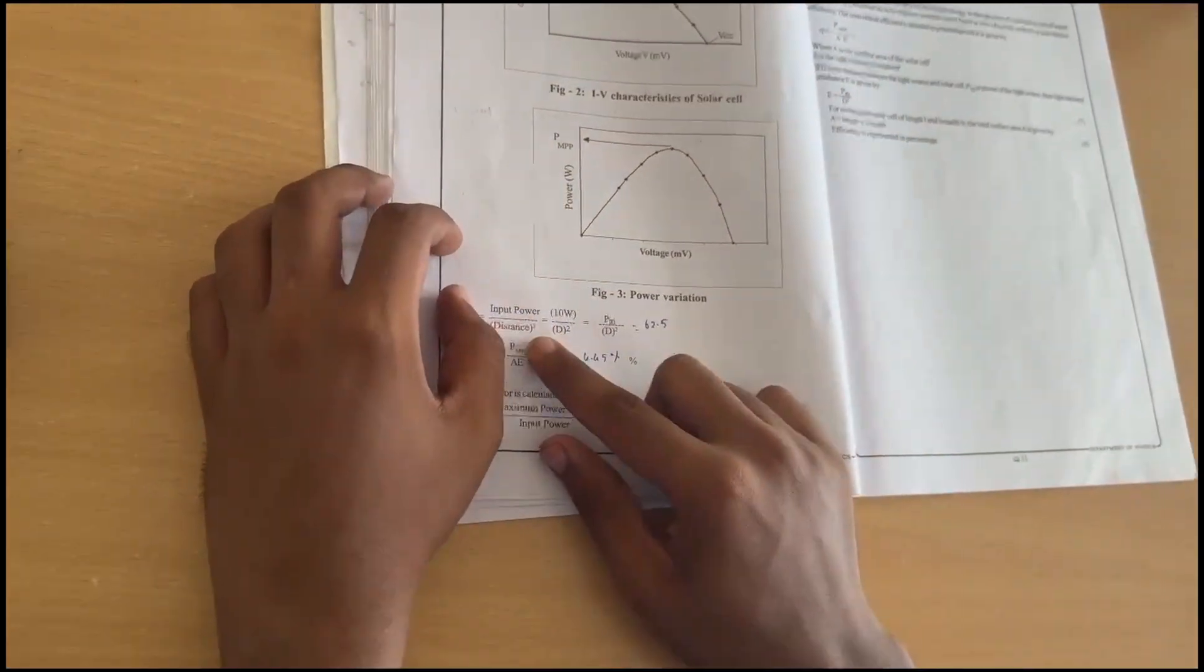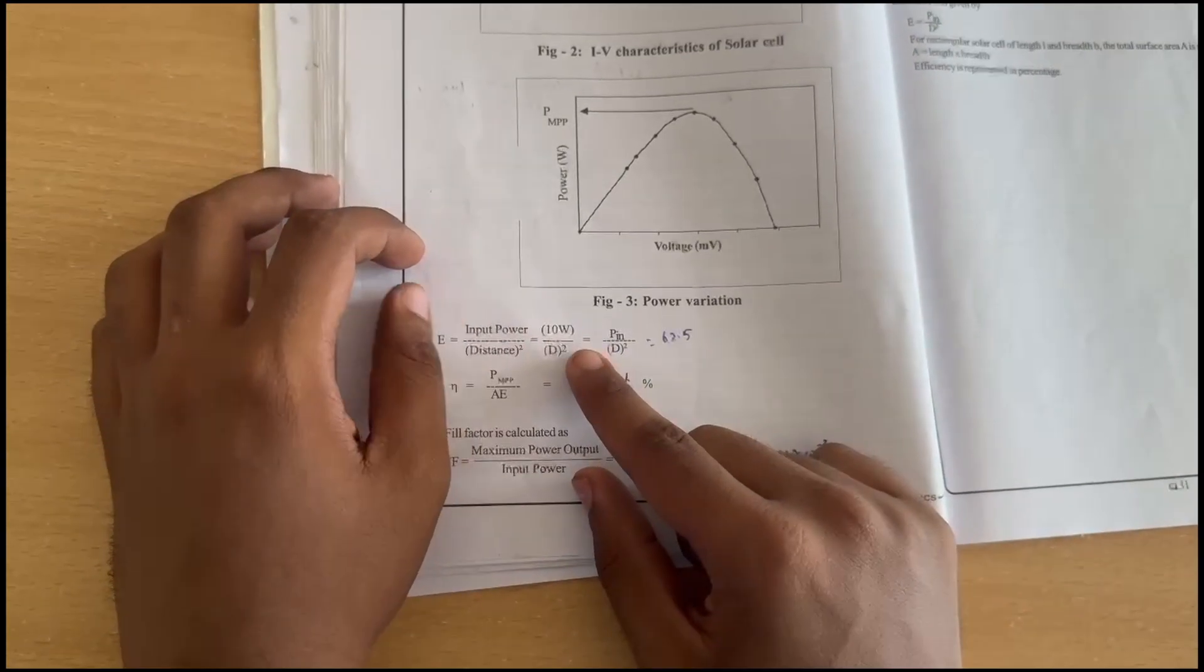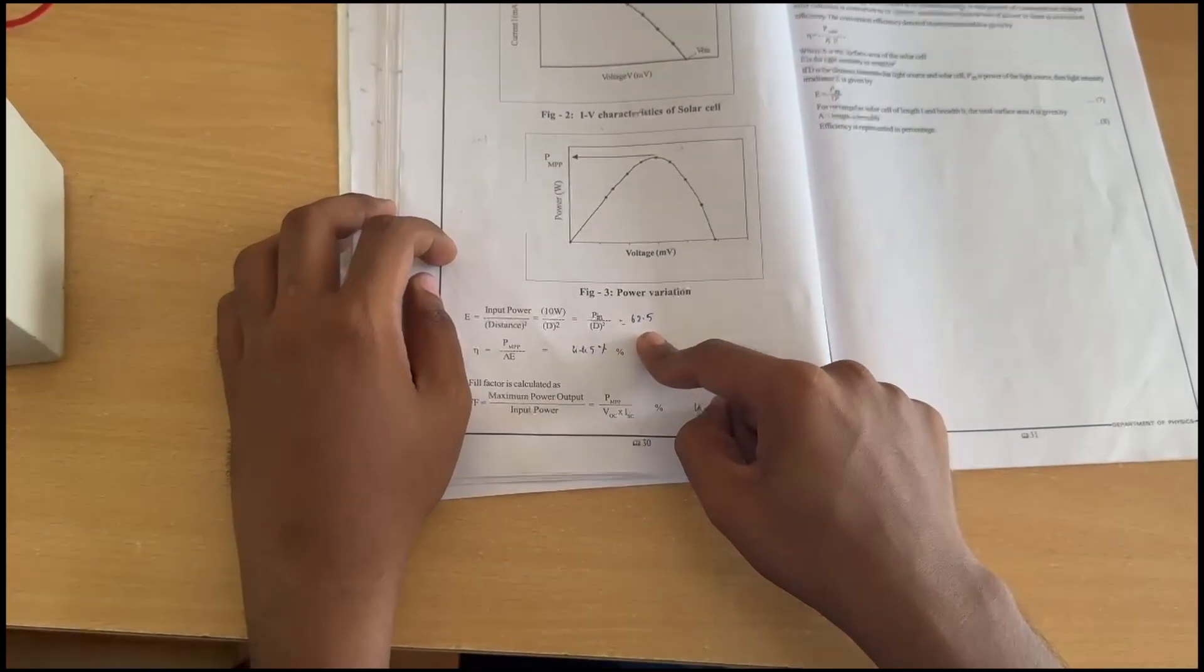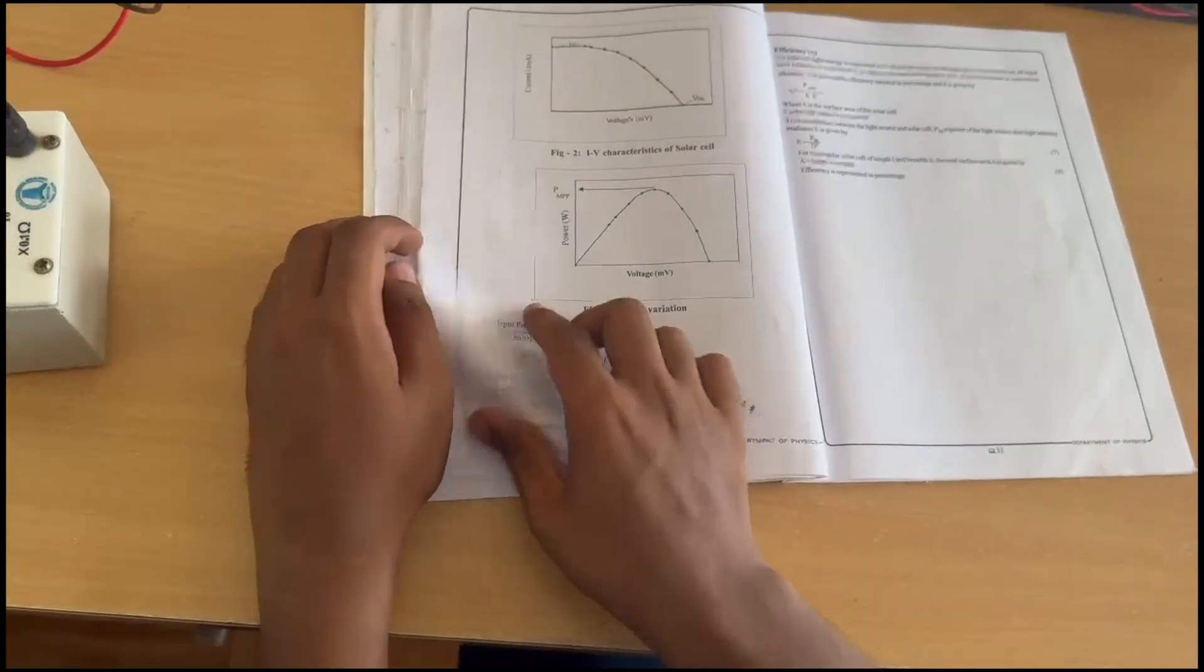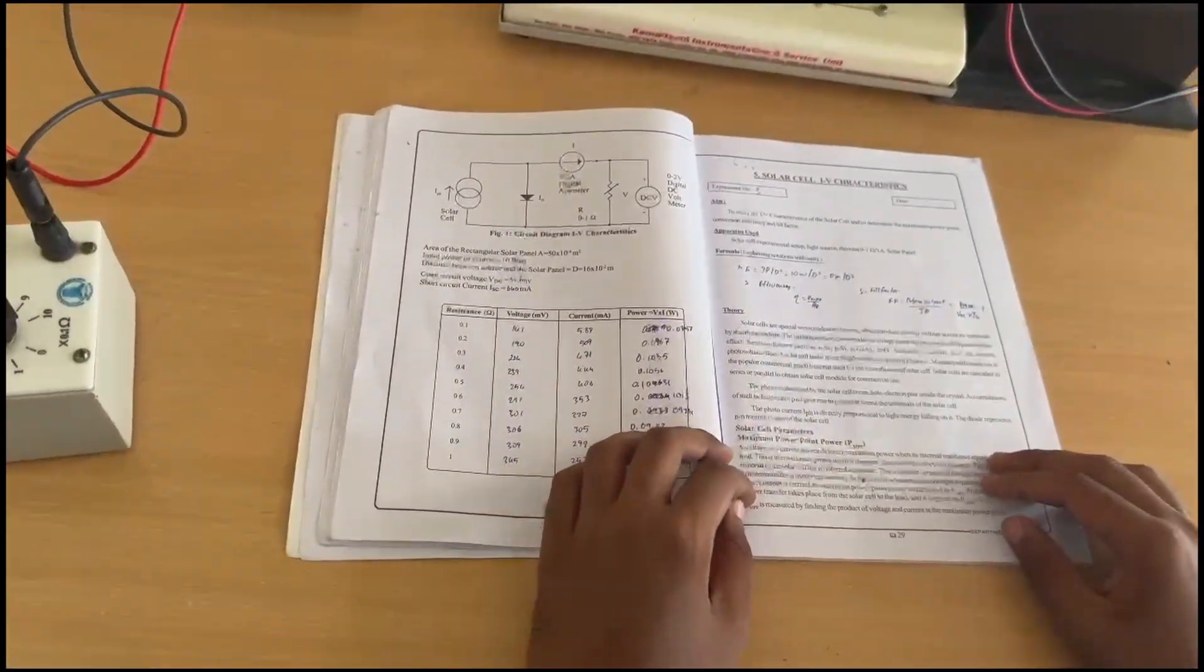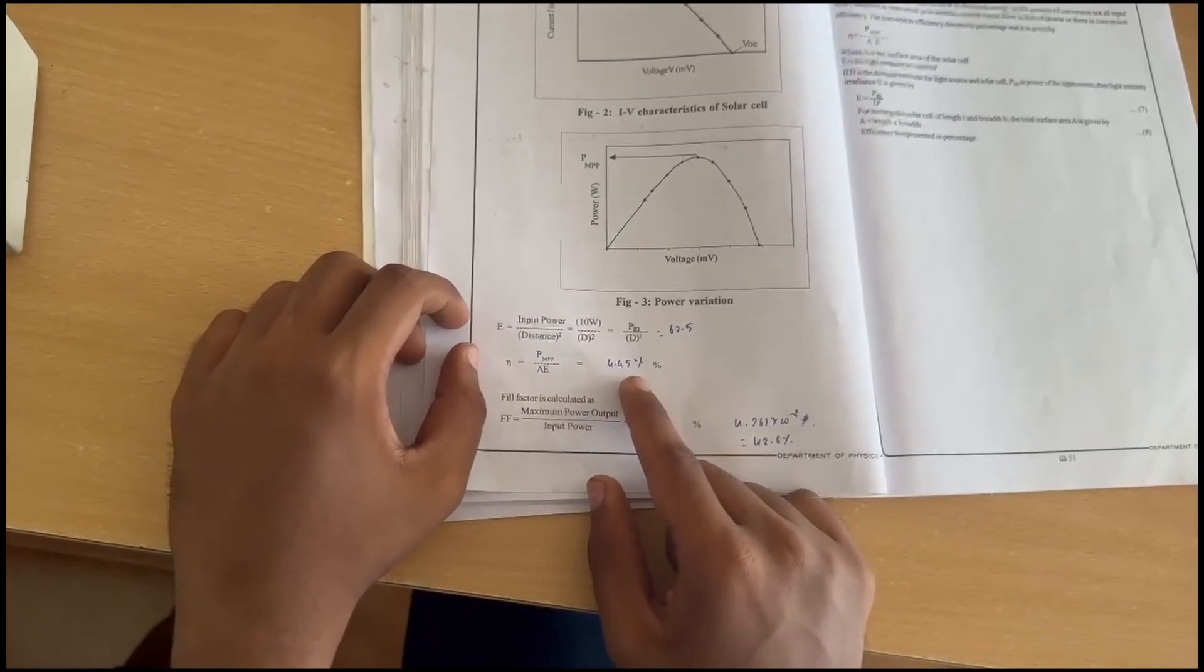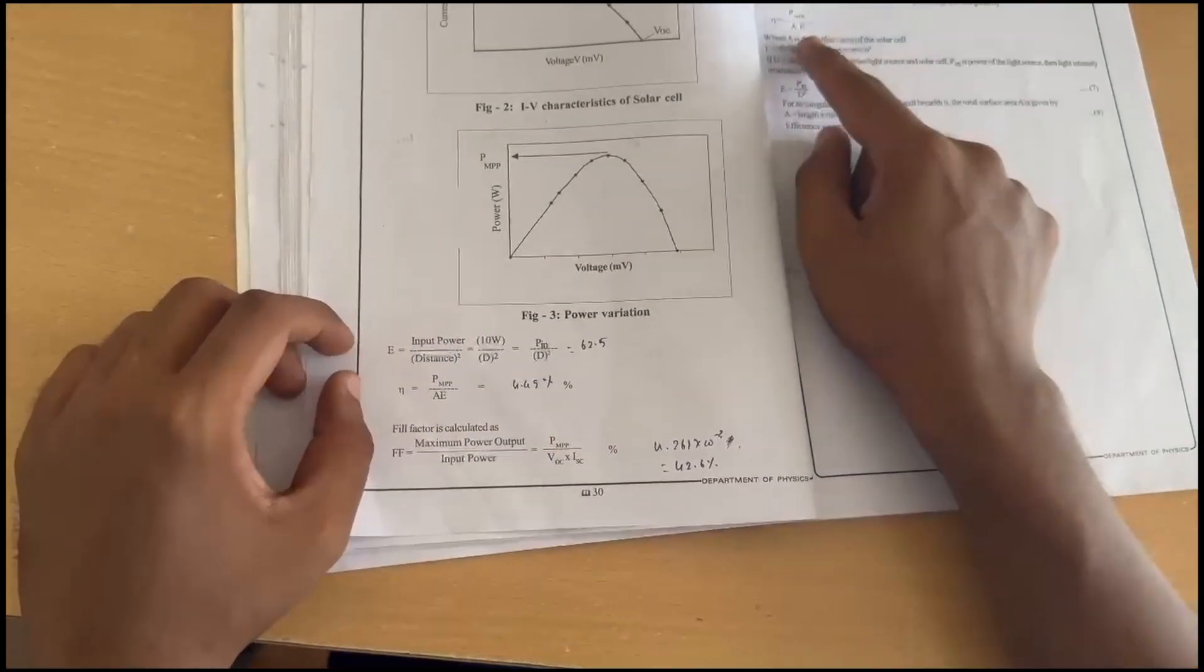Using the input power formula, the input power is 10 watts as given. With D² as given, you get 62.5. Then you find η (eta), which is the efficiency. Using the formula P_max/AE, you get 4.45 percent efficiency.